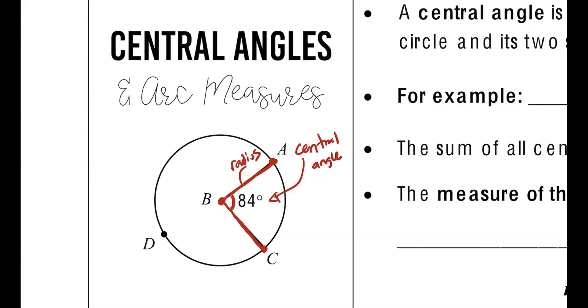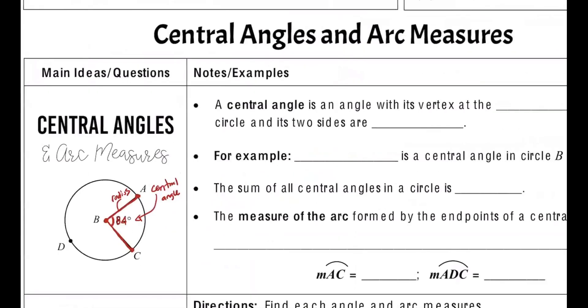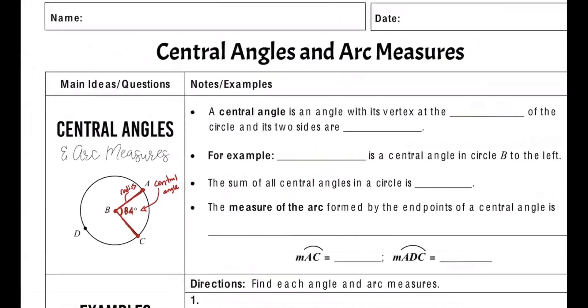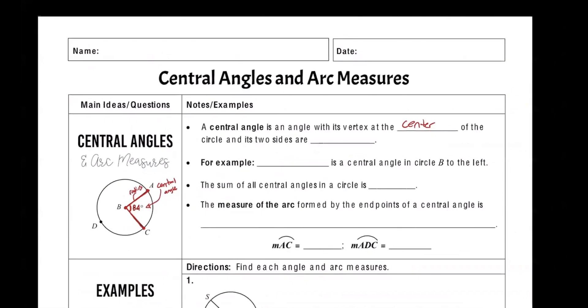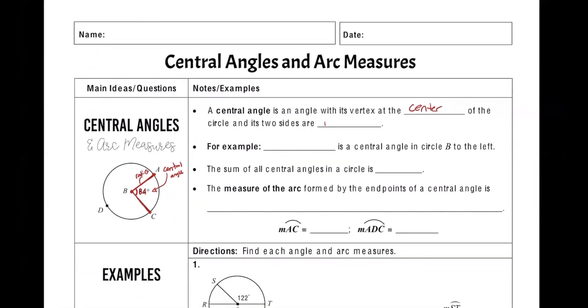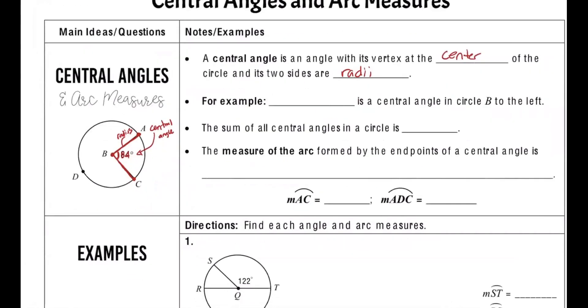And this one, for instance, you can measure it. It's 84 degrees. The entire circle is 360 degrees, so we use that to understand how to measure these. And so let's fill in our notes here. So a central angle is an angle with its vertex at the center of the circle.